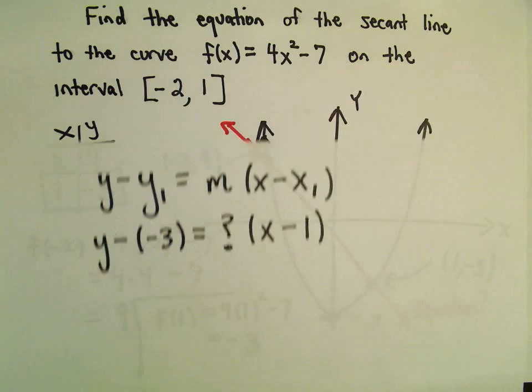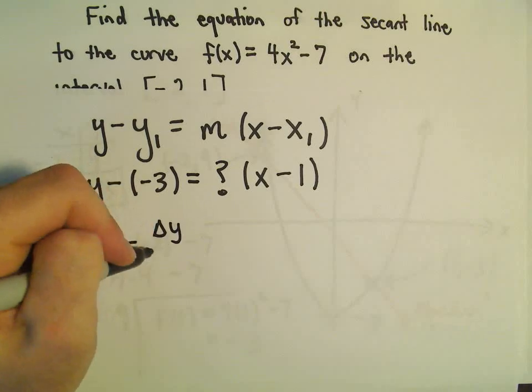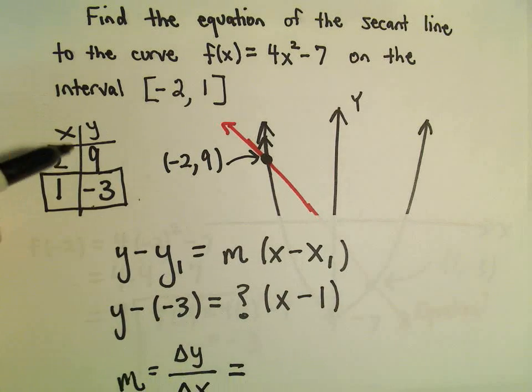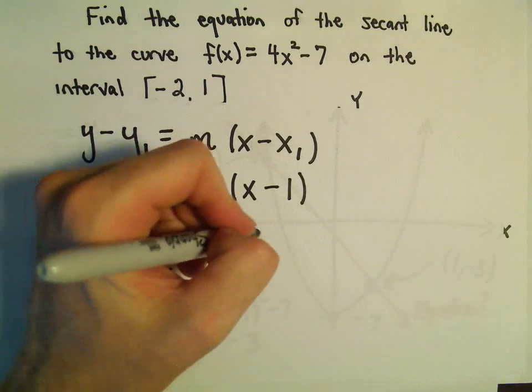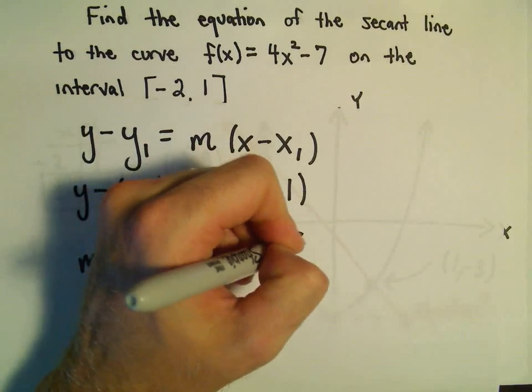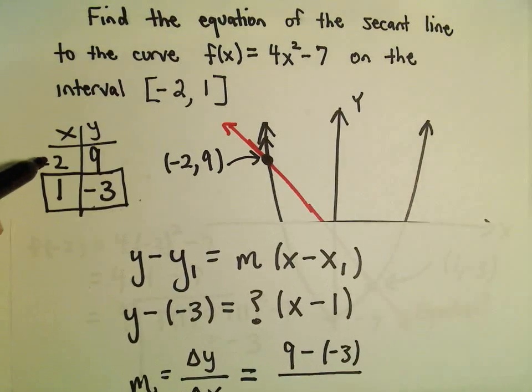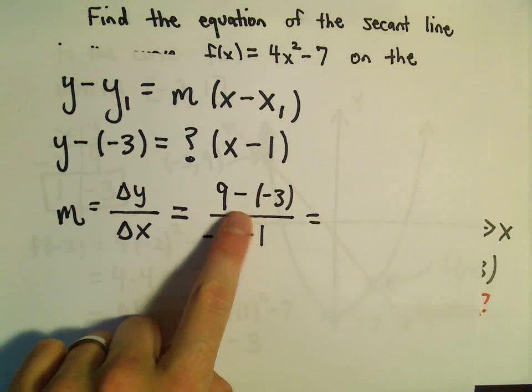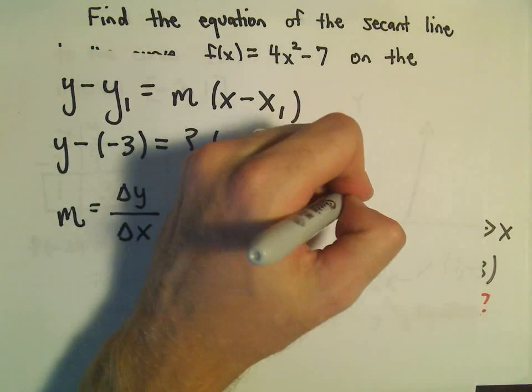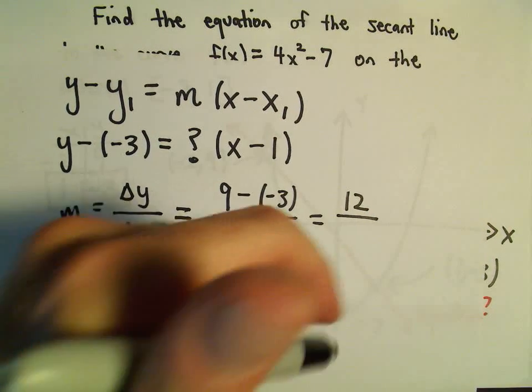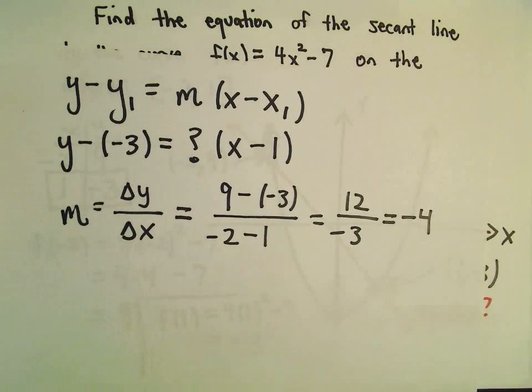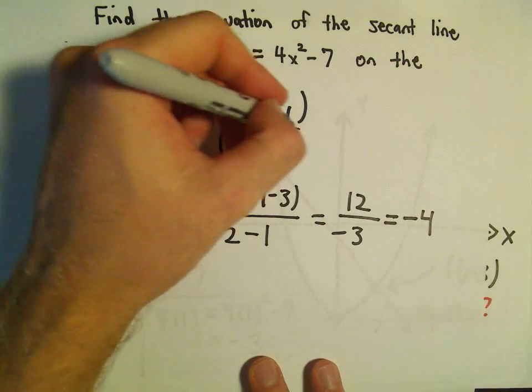To get the slope, remember slope is just change in y over change in x. So it says subtract the y-coordinates, so I'm going to do 9 - (-3) over -2 - 1. Well, that's just going to be 9 + 3 which is 12, and then we'll have -3 in the denominator. So we'll get our slope of -4.